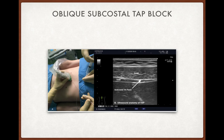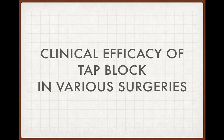The oblique subcostal TAP block is a newer technique requiring a longer needle. You start from the midline and go laterally to the mid-axillary line, continuously injecting drug in the TAP plane. Bilateral catheters can be placed to provide excellent analgesia for abdominal surgery. You require at least a 15-centimeter needle along with a catheter for this block.